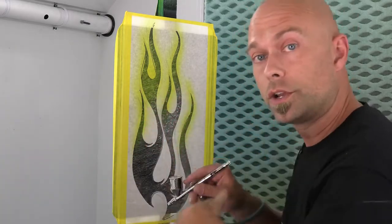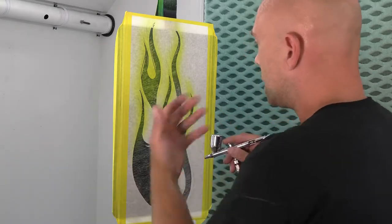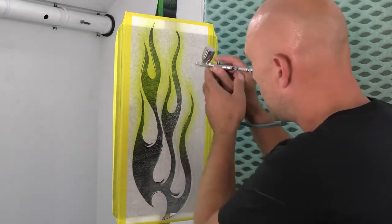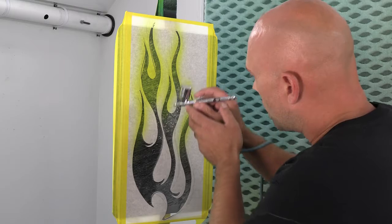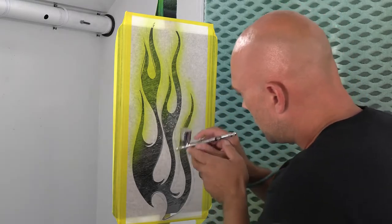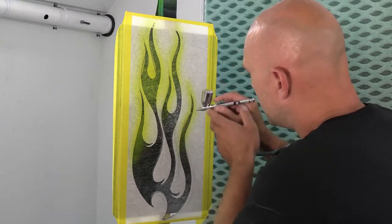That's the beauty part of the transparent color. You can slowly work it and you can get a really nice vivid color. So I'm going to continue on, getting this where I want it. And then we're going to go to our transparent orange.